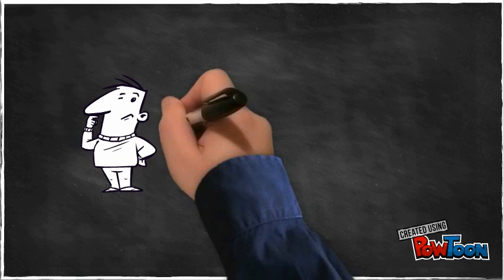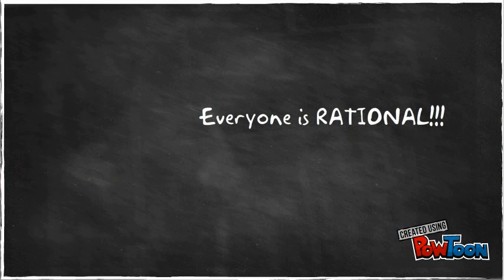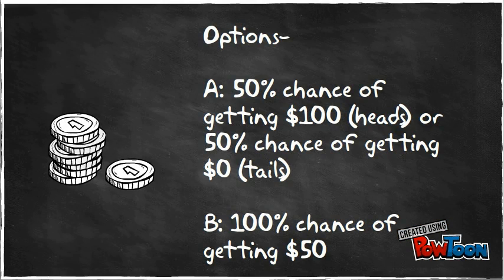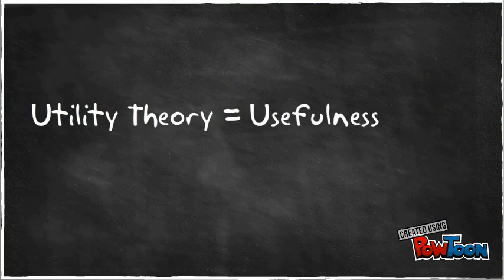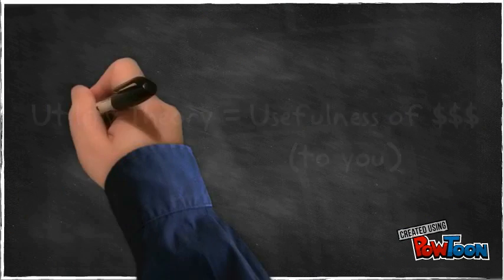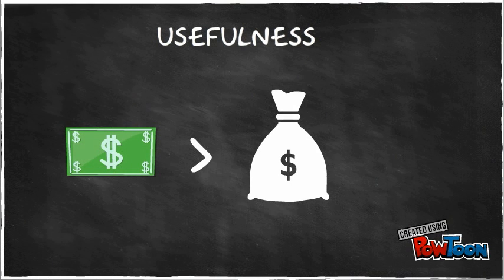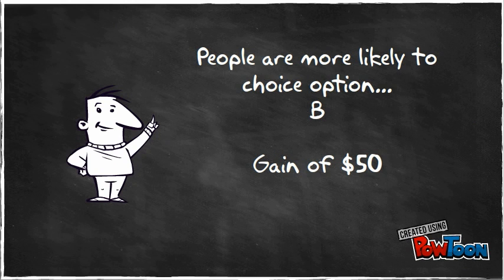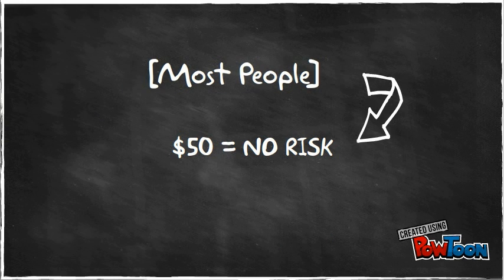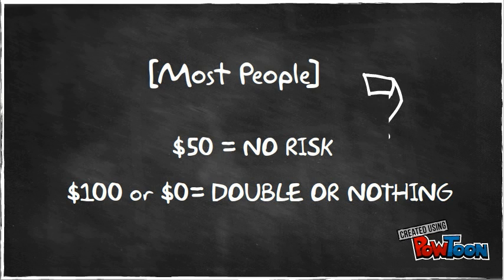Utility Theory explains why most people are risk-averse when making decisions that could result in a loss, especially in situations such as gambling. The theory is based on the assumption that everyone is rational in all the decisions they make. For example, you are given the choice to either flip a coin — heads is $100 and tails is $0 — or the choice to gain $50. According to Utility Theory, people are more likely to choose the gain of $50, because it has the highest utility since it carries no risk, rather than the possibility of receiving double or nothing with the gamble.